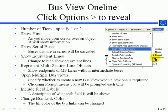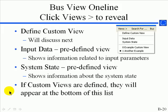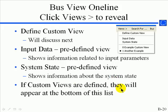A couple of other options are available for including field labels or changing the color of the bus link. The Bus View One Line has presets where you can define fields shown on it. There are two predefined views: the input data view, which shows things like branch impedances and input parameters, and the system state view, which shows angle and magnitude at buses. If custom views are defined, they will appear at the bottom of the list.